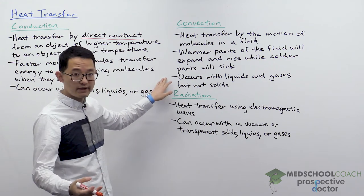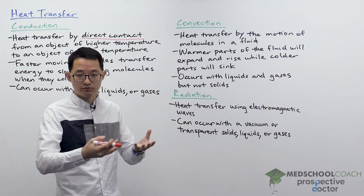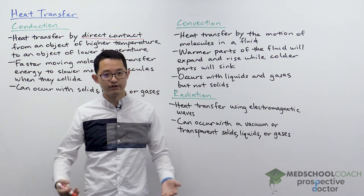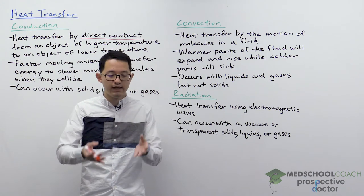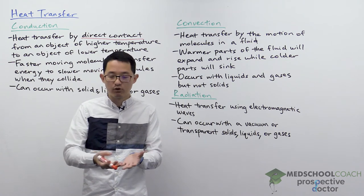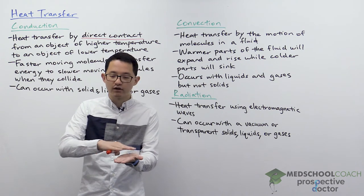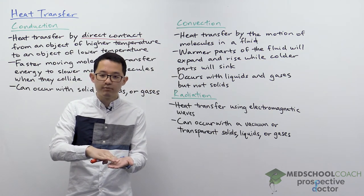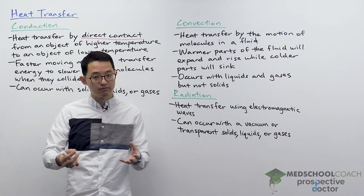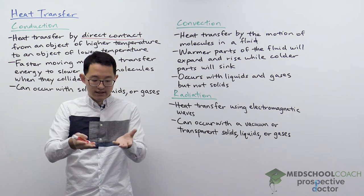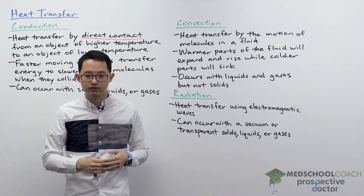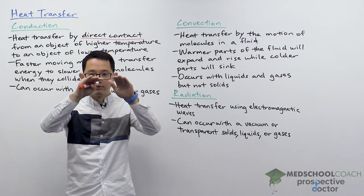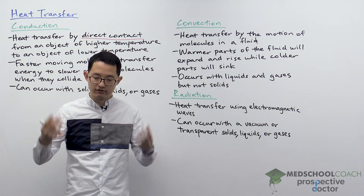That candle example involved convection through gas molecules. This also works with liquids — for example, boiling a pot of water. The metal pot gets heated and transfers heat to the bottom layer of water molecules by conduction, but once those water molecules become hot, they expand, become less dense, and rise to the surface. The colder molecules on top sink and get heated in turn. You get this continuous cycle of warmer fluid moving up and colder molecules moving down, continuing until everything becomes very hot.